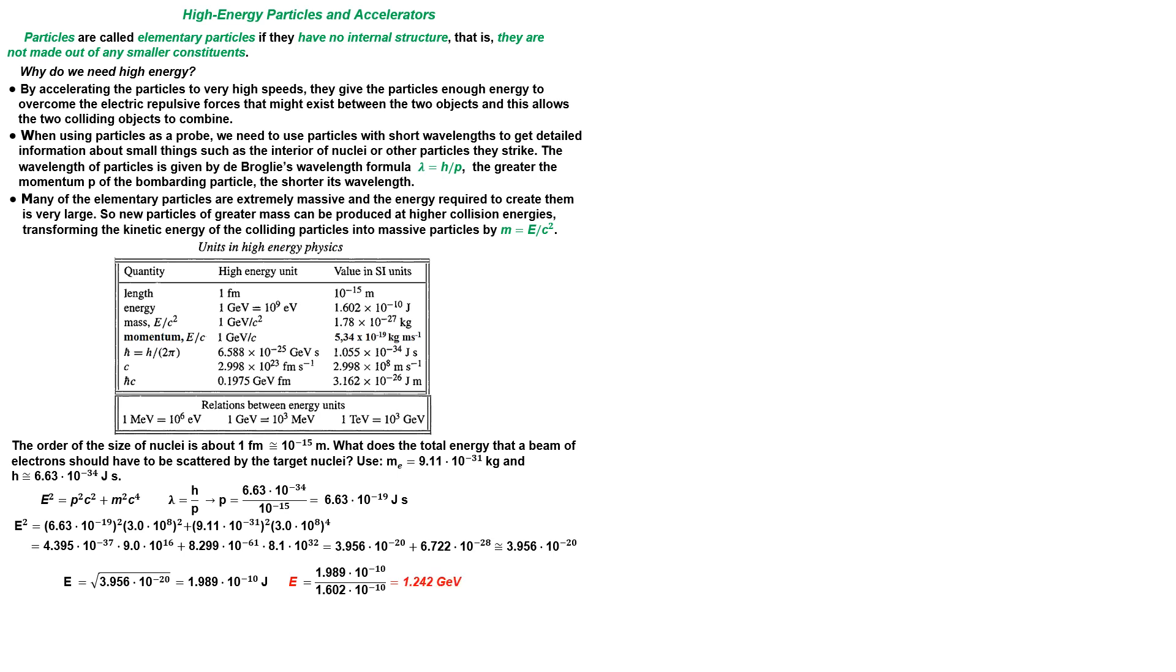The total energy is 1.242 GeV. This is very high energy and it means that the de Broglie wavelength of these electrons is small enough to resolve particles inside the proton. In effect, the electrons can diffract off quarks inside the protons. The rest energy of the electron is much smaller than this energy.